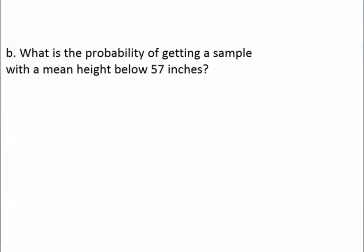Now that we know that the sampling distribution is normal, we can go ahead and use z-scores to calculate probabilities. This first question asks, what's the probability that the sample mean will come out to a number below 57?